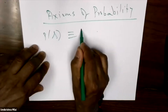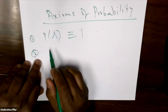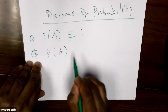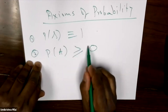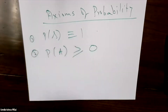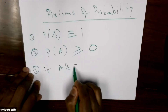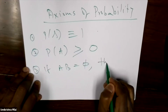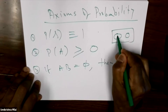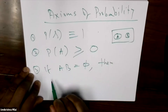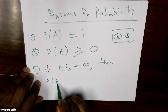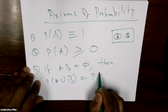The axioms of probability say: first, the probability of the whole set is 1, which is easy to understand. Second, the probability of any set is non-negative. These two are common sense. The third axiom is: if A and B are mutually exclusive, then the probability of their union is the sum of the probabilities.